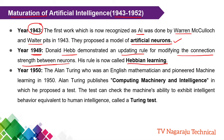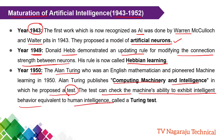In the year 1950, the popular scientist Alan Turing published a paper called 'Computing Machinery and Intelligence,' in which he proposed one test. The purpose of the test is to check the ability of a machine — whether the machine can exhibit intelligent behavior equivalent to human intelligence or not. This test is called the Turing Test.